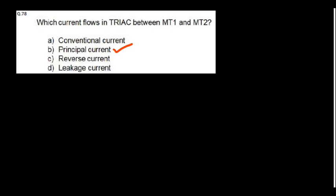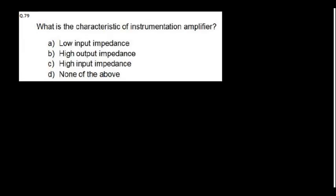What is the characteristic of an instrumentation amplifier? High input impedance. Instrumentation amplifiers are connected to sensor outputs which produce very low signals, so the instrumentation amplifier must have very high input impedance.